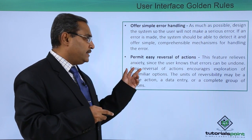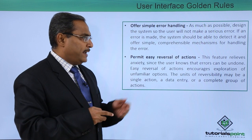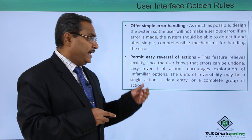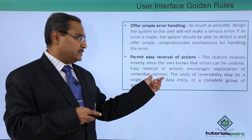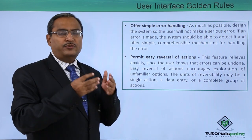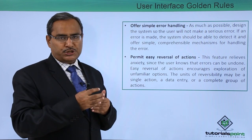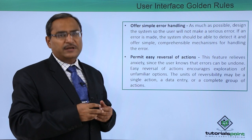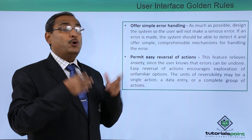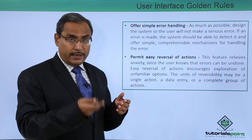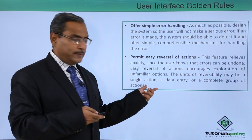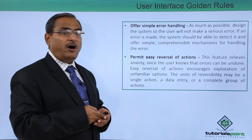The next rule is to permit easy reversal of actions. This feature relieves anxiety since users know that errors can be undone. Easy reversal of actions also encourages exploration of unfamiliar options. For example, if a file is accidentally deleted, knowing that the deletion can be reversed allows users to explore new options more confidently. The units of reversibility may be a single action, a data entry, or a complete group of actions.